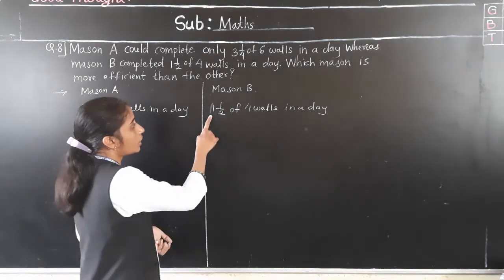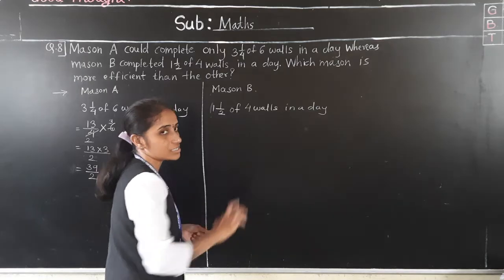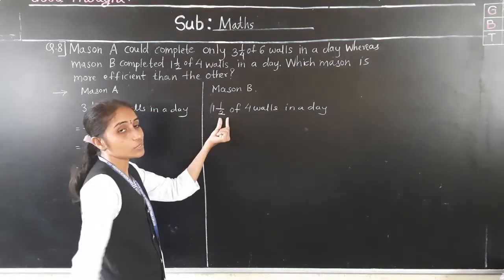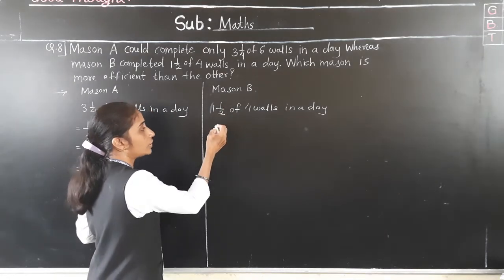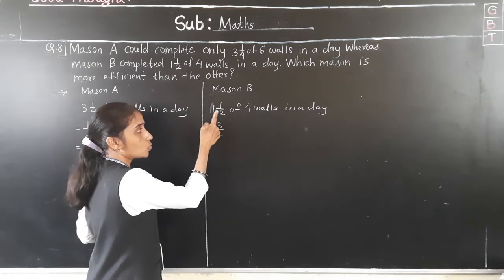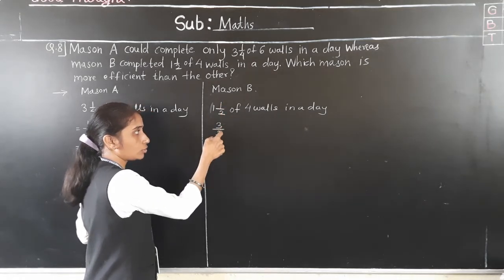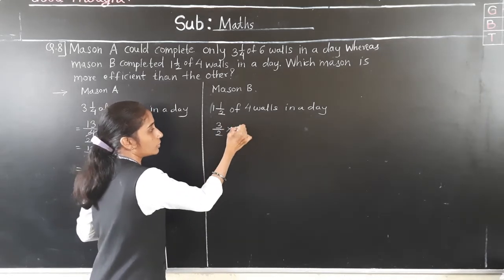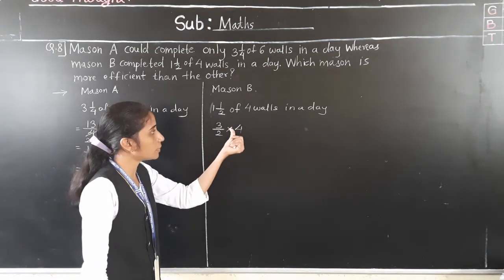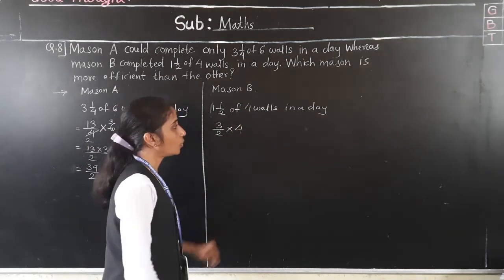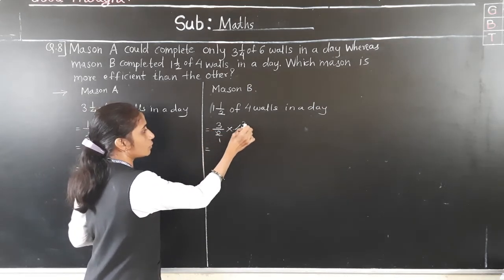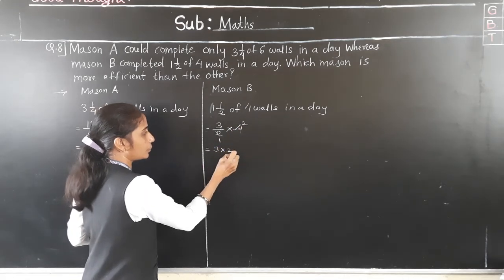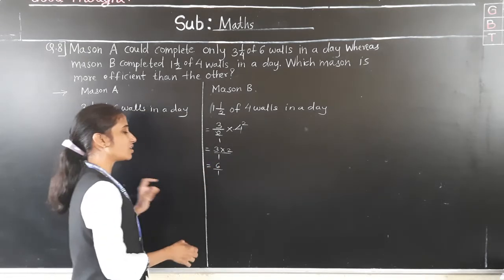For Madison B: 1 and 1/2 of 4 volts. Convert 1 and 1/2 to improper fraction — 2 ones are 2, plus 1 is 3 upon 2. Multiply by 4. Cancel: 2 twos are 4, so 3 multiplied by 2 over 1, which is 6 upon 1, meaning 6.